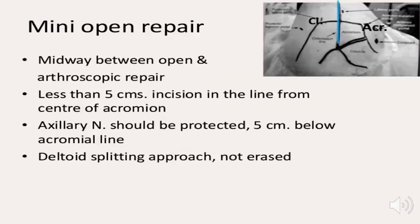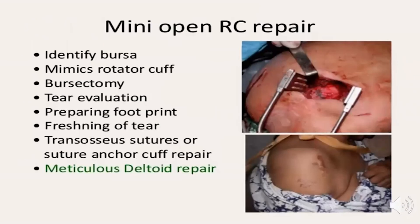For the mini-open repair, the incision is midway along the line with the center of the acromion, less than 5 cm to avoid injury to the axillary nerve. It is performed through a deltoid-splitting approach. The steps include: identifying the bursa, excising the bursa, evaluating the tear, roughening the footprint for better healing, freshening the tear edges, and then performing a transosseous or suture anchor repair.